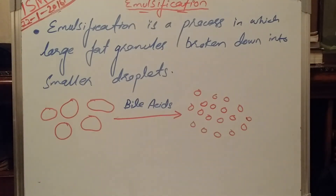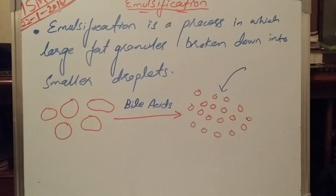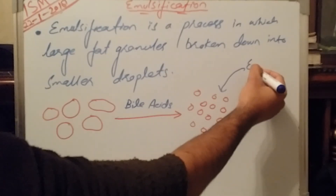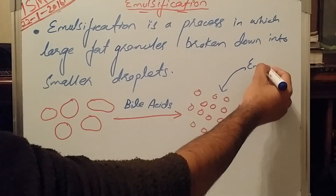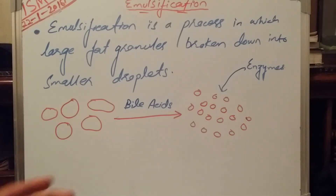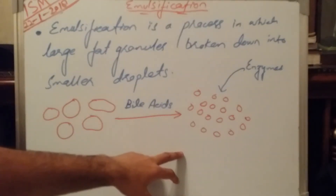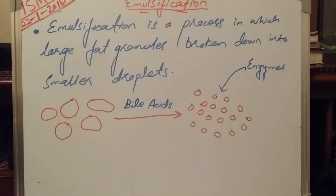Once this conversion takes place, enzymes will start digesting these smaller droplets. The enzymes — mainly pancreatic lipase — take on the fat droplets and convert them into smaller units, starting the process of digestion. After the conversion of larger droplets into smaller droplets, the enzymes will effectively perform their action and digest completely the fatty droplets, converting them into fatty acids and glycerol.